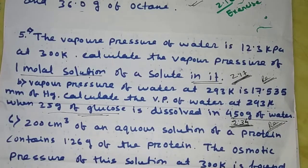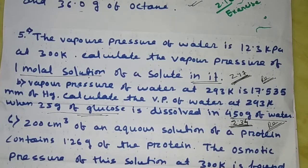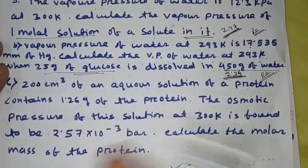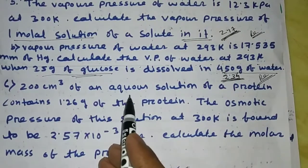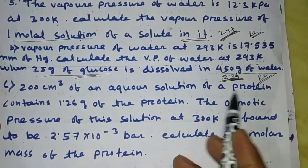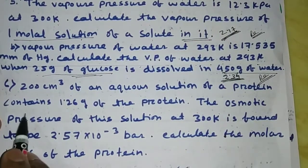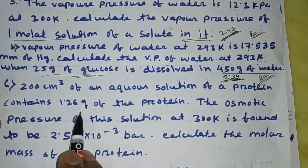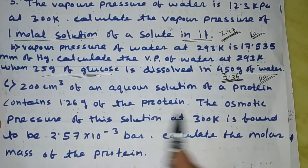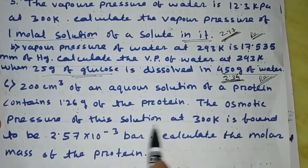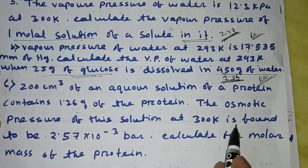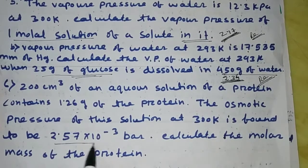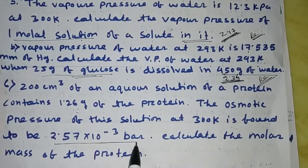Namaskar! My name is Pollock Kodita. Welcome to my edugason channel, Unique Science Tutorial. Today's problem: 200 cm³ of an aqueous solution of a protein contains 1.26 grams of protein. The osmotic pressure of this solution at 300 Kelvin is found to be 2.57 × 10⁻³ bar. Calculate the molar mass of the protein.